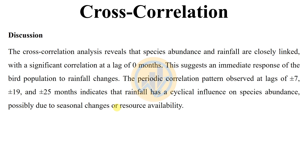In the discussion section, the cross-correlation analysis reveals that species abundance and rainfall are closely linked, with significant correlations at a lag of 0 months, suggesting an immediate response of bird populations to rainfall changes. The periodic correlation patterns observed at lags of approximately 7, 19, and 25 months indicate that rainfall has a cyclical influence on species abundance, possibly due to seasonal changes in resource availability.